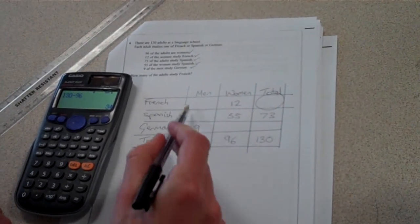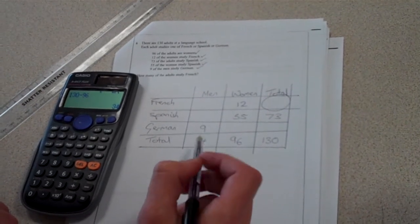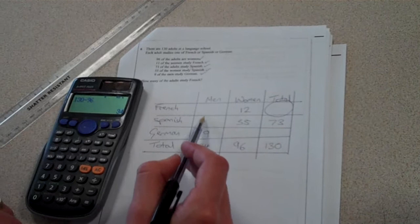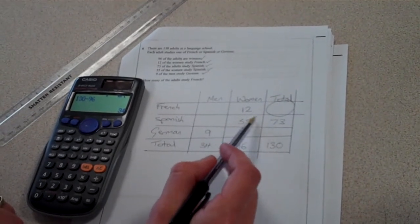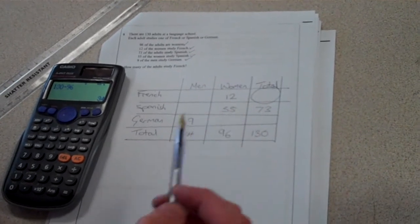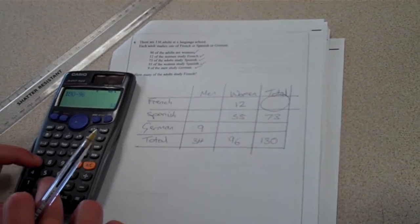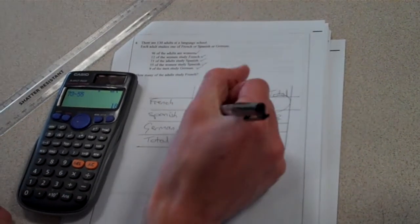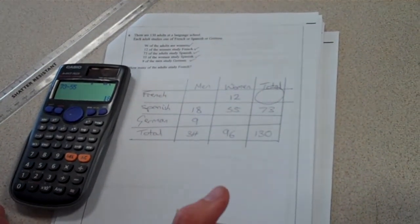That's not going to lead me to anything else quite yet. But I could here work out the number of men doing Spanish. 55 are women and there's 73 in total. So again, if I do 73 minus my 55, I'll work out the total number of men doing Spanish. So 73 minus 55 leaves me with 18 men that are doing Spanish.